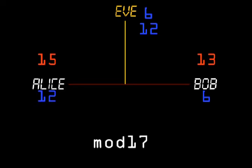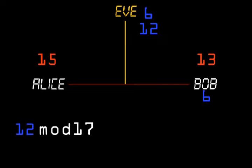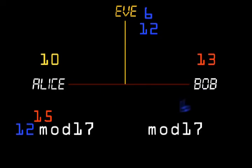And now the heart of the trick. Alice takes Bob's public result and raises it to the power of her private number to obtain the shared secret, which in this case is 10. Bob takes Alice's public result and raises it to the power of his private number, resulting in the same shared secret.